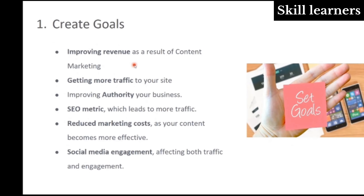A good starting point for your content marketing strategy plan is to set out content marketing goals and objectives. This makes it easy to focus and prioritize content creation so your content calendar stays on track. A content marketing mission statement takes into account your target audience, the content you use to reach them, and your value addition. Typical goals include improving revenue as a result of content marketing, getting more traffic to your site, improving authority and SEO metrics, reducing marketing costs as content becomes more effective, and increasing social media engagement.